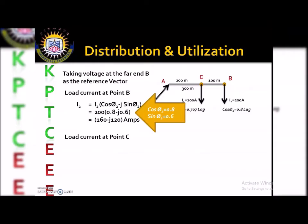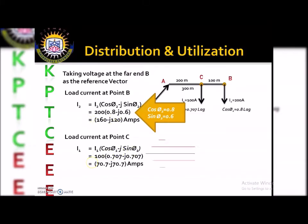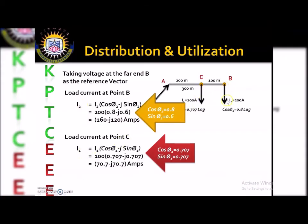Now, load current at point C: I1 = I1 × (cos φ1 − j sin φ1). Here cos φ1 = 0.707, so sin φ1 = 0.707 as well. Therefore I1 = 100 × (0.707 − j0.707) = 70.7 − j70.7 amperes. This is the load current drawn at point C on the distributor.